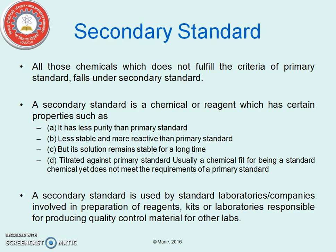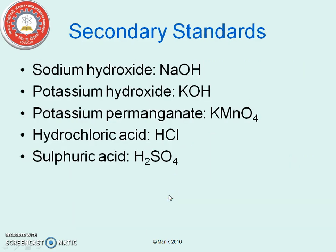Secondary standard. All those chemicals that do not fulfill the criteria of the primary standard fall under this category. They are less pure than the primary standard. They are less stable but more reactive than the primary standard. They must be titrated against the primary standard to know their exact concentration. These are some of the examples of the secondary standards.